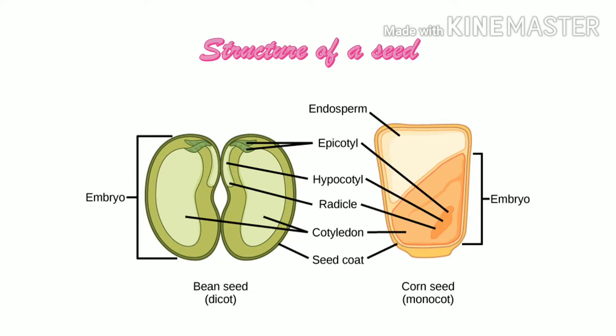Monocot seeds have only one thin cotyledon inside. They do not store food inside them — food is stored in some other part of the seed. Examples are rice and maize. An outer covering called the seed coat protects the baby plant inside the seed. The seed coat has a tiny hole through which the seed gets water. Cotyledons store food for the baby plant.